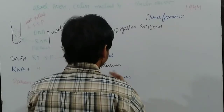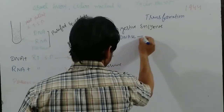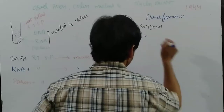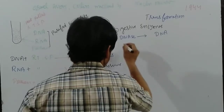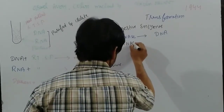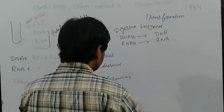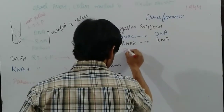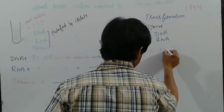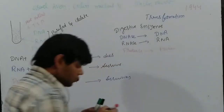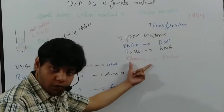They used digestive enzymes: DNase, which can degrade DNA; RNase, which can degrade RNA; and protease, which degrades protein. In the second round of the experiment, they used these kinds of digestive enzymes.